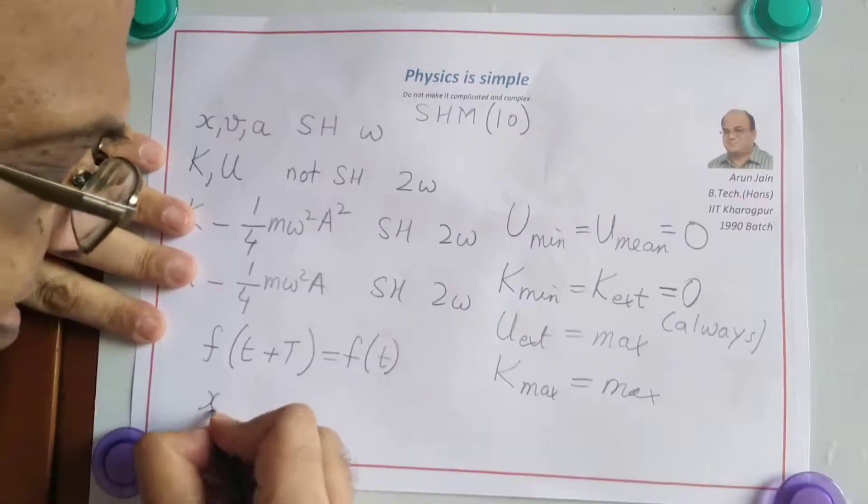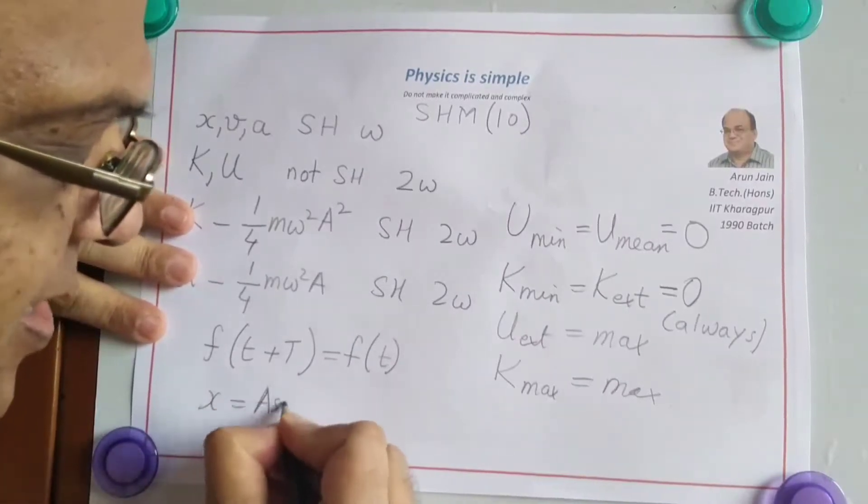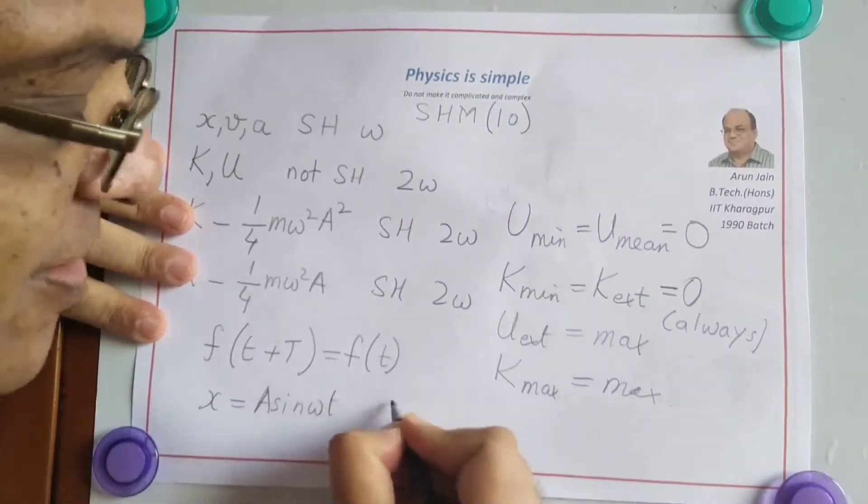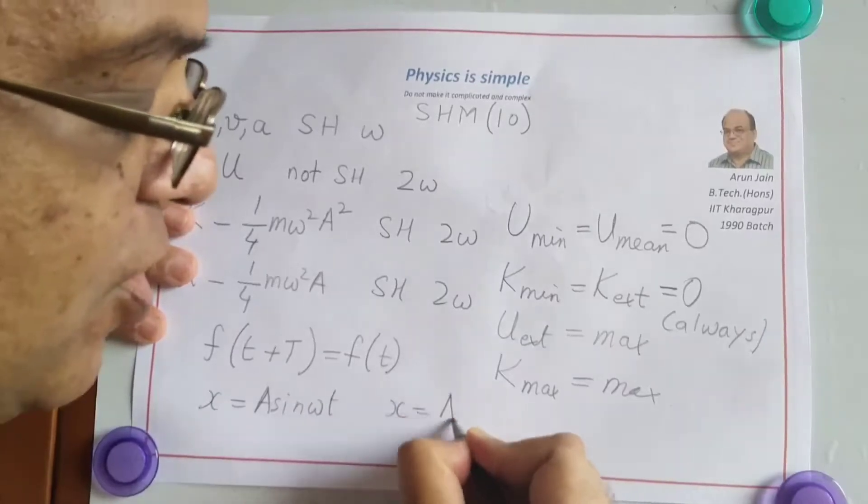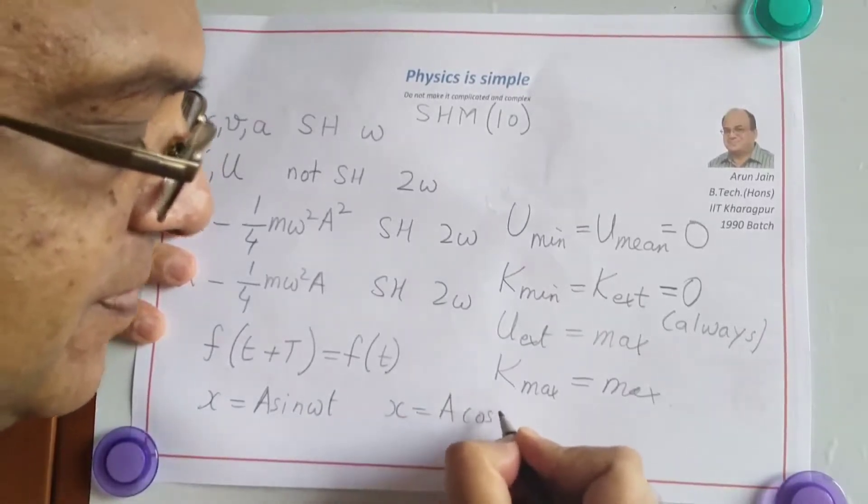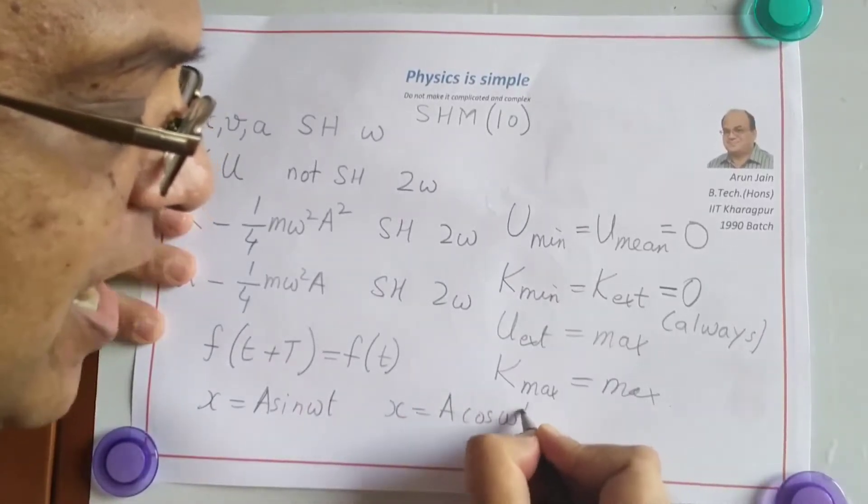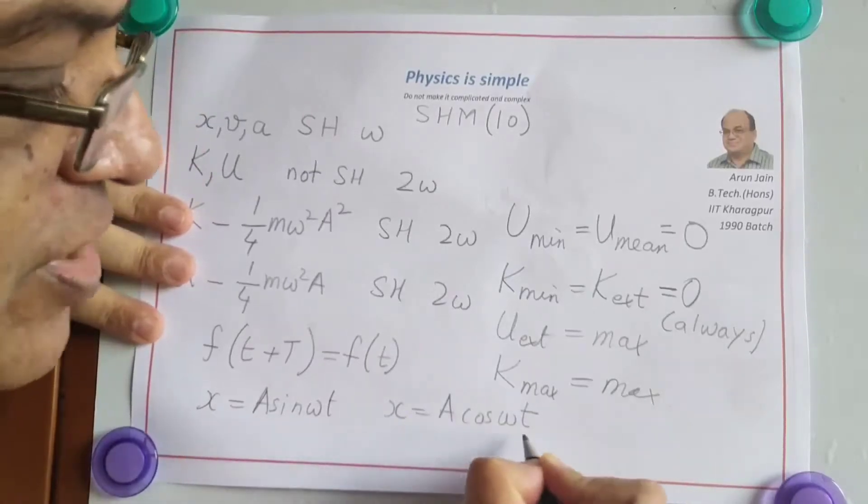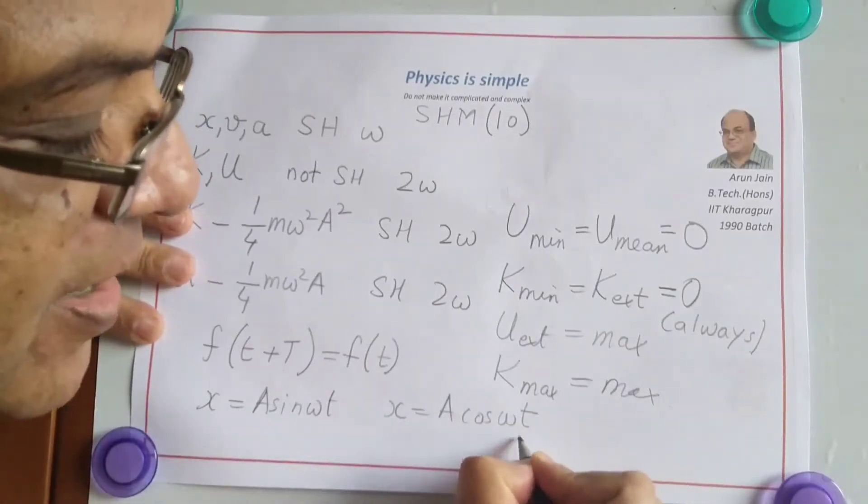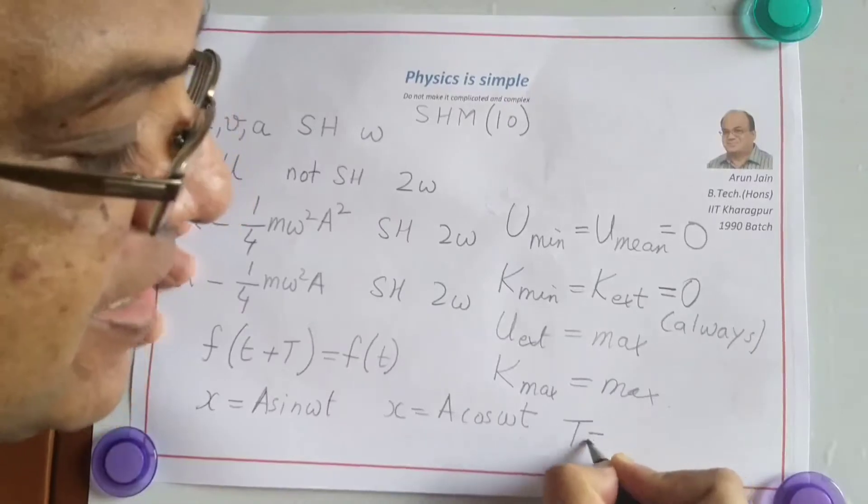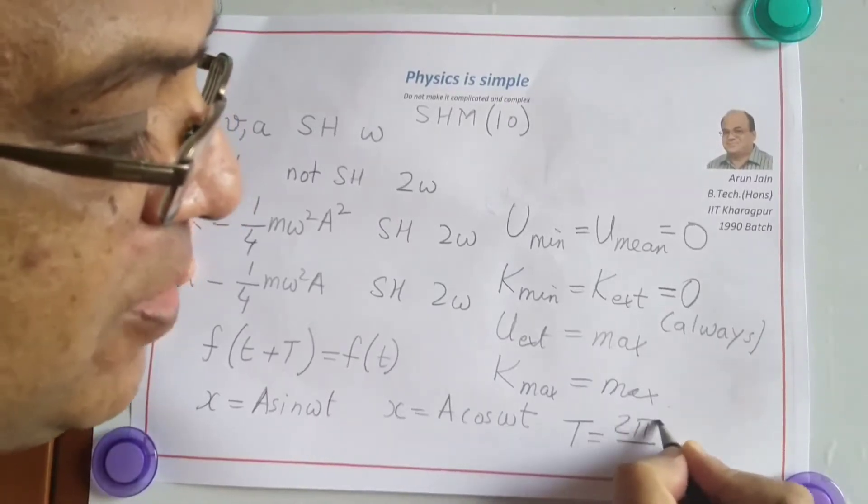If X is equal to A sin omega T or X equal to A cos omega T, both are periodic functions with angular frequency omega and therefore time period 2 pi by omega.